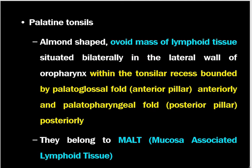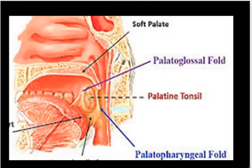Palatine tonsils are commonly considered as tonsils by most of us. They are almond-shaped ovoid masses of lymphoid tissue situated bilaterally in the lateral wall of the oropharynx, within the tonsillar recess bounded by the palatoglossal fold (anterior pillar) anteriorly and the palatopharyngeal fold (posterior pillar) posteriorly. The anterior pillar is formed by the palatoglossus muscle, whereas the posterior pillar is made by the palatopharyngeus muscle. You can see the picture of the tonsils here.